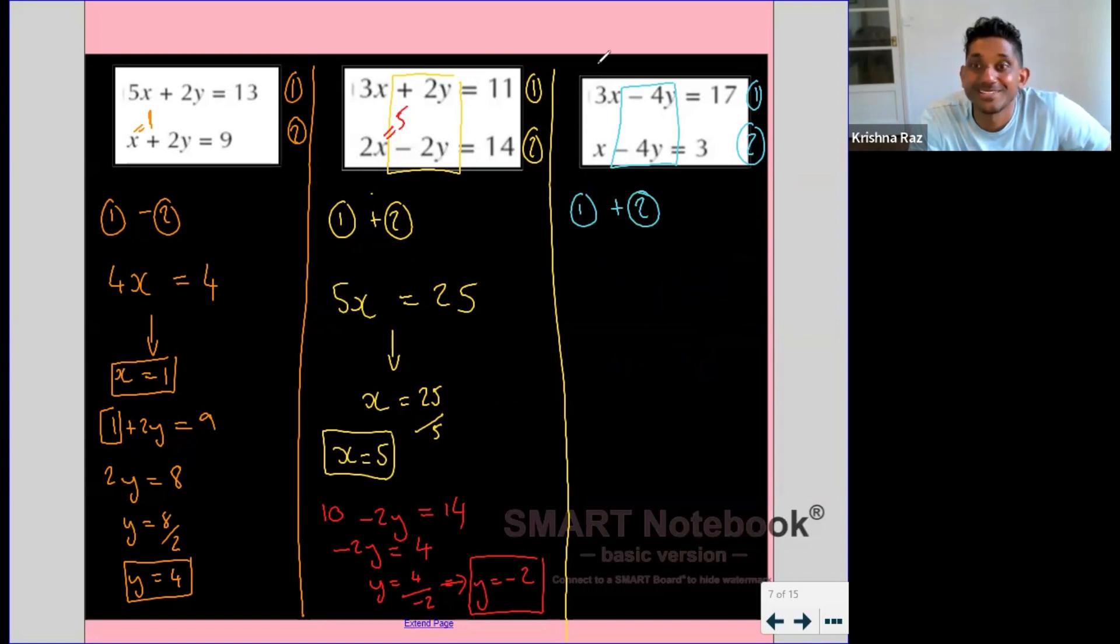So we're going to have 2x, and minus 4y minus minus 4y is 0, and that will equal 14, leading to x equaling 7.